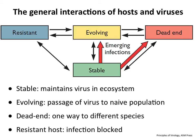To understand emergence, we look at the general interactions of hosts with viruses. There are four different outcomes. First, stable interactions where the virus is adapted to its host, replicates, spreads, and maintains itself. Second, the evolving situation — when a virus is introduced to a brand new host, which is what we're talking about today. Introduction leads to evolution as the virus undergoes sequence selection until it adapts to the host, which can take many years.